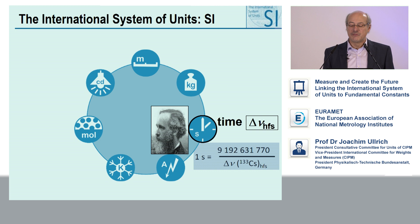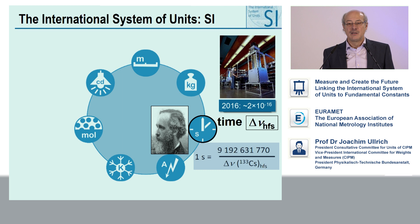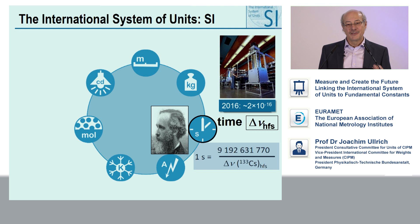This concept was very, very far-reaching. When the second was redefined, we could realize it with an uncertainty of 10 to the minus 14. Nowadays, we have improved that by a factor of 100 using atomic fountains — we can realize the second with an uncertainty of 10 to the minus 16. So we improved by two orders of magnitude without changing the definition. This is the far-reaching concept behind it.